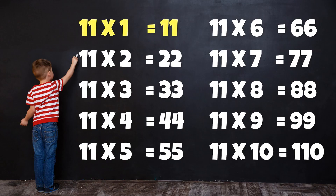Table of 11. 11 1's are 11. 11 2's are 22. 11 3's are 33. 11 4's are 44. 11 5's are 55. 11 6's are 66. 11 7's are 77. 11 8's are 88. 11 9's are 99. 11 10's are 110.